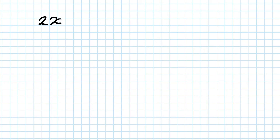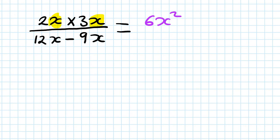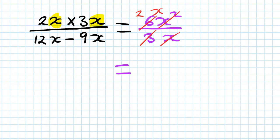Next one: 2x times 3x, all over 12x minus 9x. Simplify the numerator first: 2 times 3 is 6, and x times x is x squared, so 6x squared. The denominator: 12 minus 9 is 3, so 3x. Then 6 divided by 3 is 2, and x squared divided by x is x — so left with 2x over 1, which is 2x.